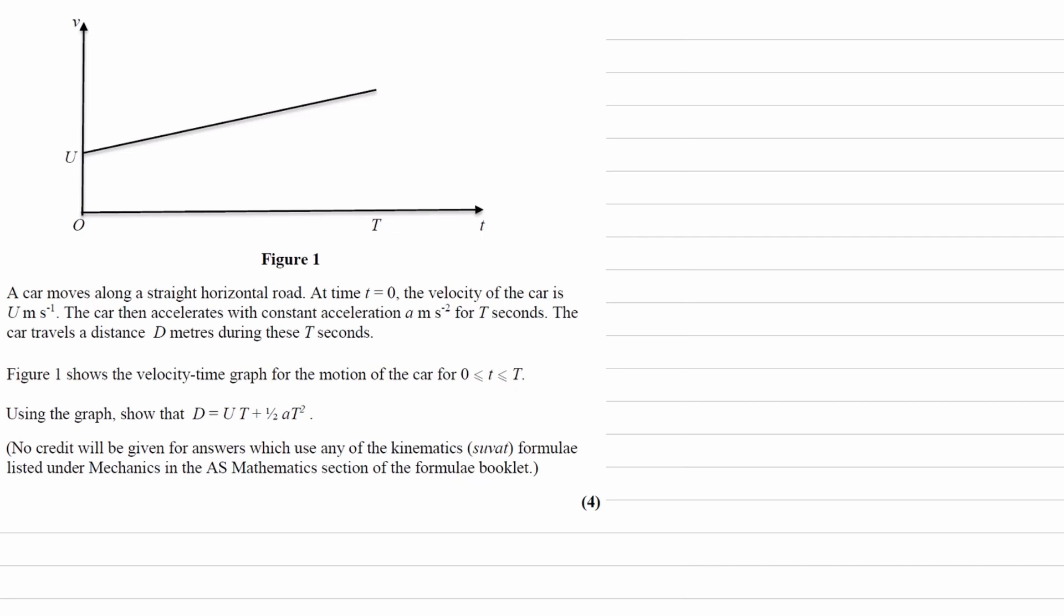And then we're trying to show that D, the distance travelled, is equal to this. And we can't use any of the SUVAT equations. So we have to derive everything from this graph.